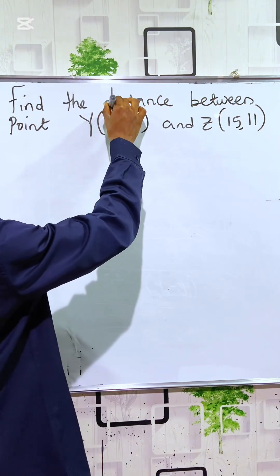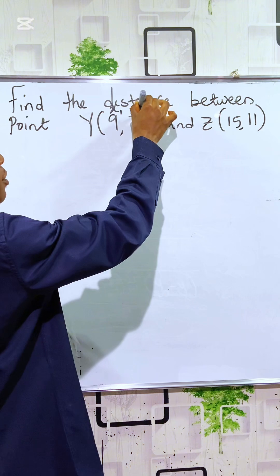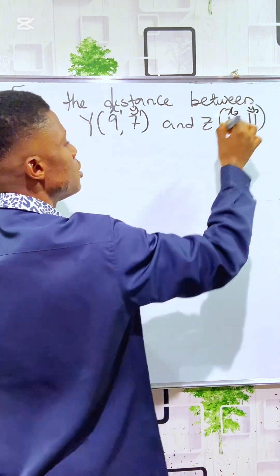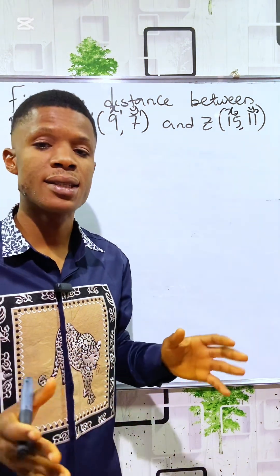So first, this is the X coordinate X1, and this is Y1, and here is X2, and this is Y2. So for us to do that, we will first represent it on a Cartesian plane.